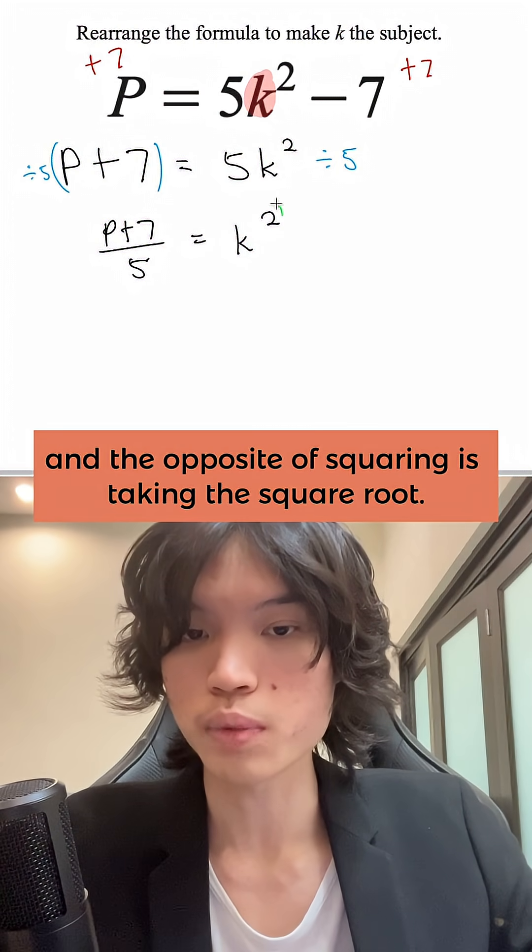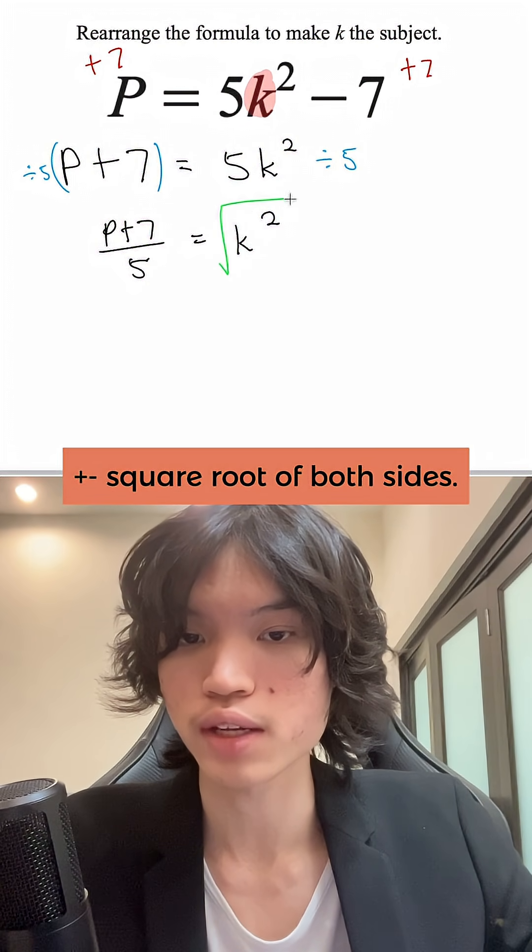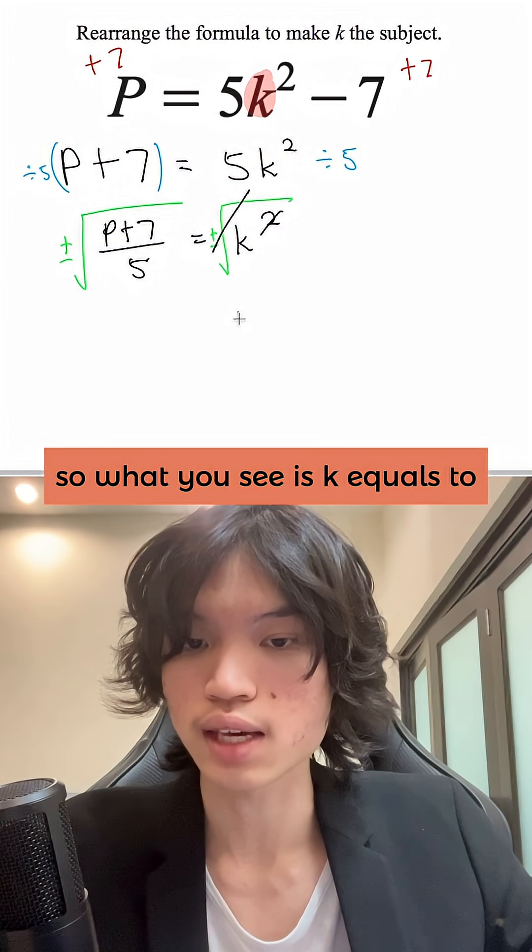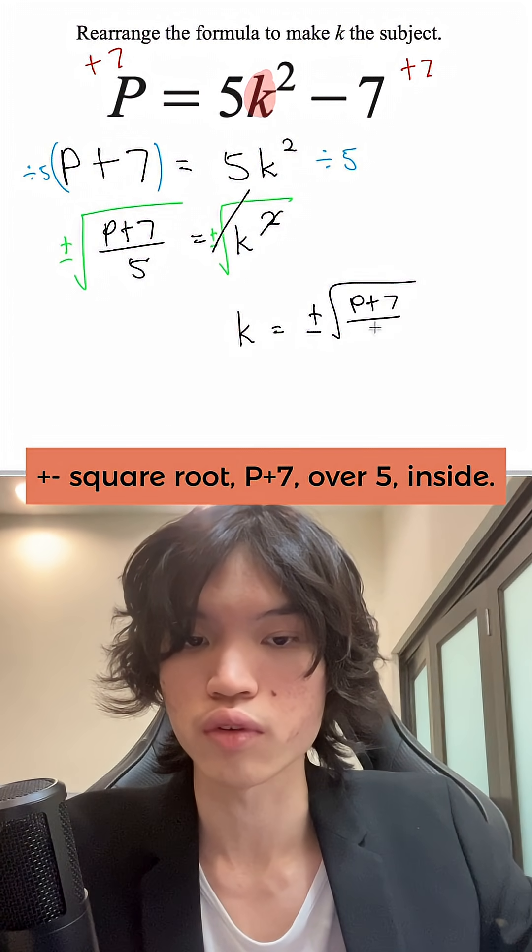In this case, we have k squared. The opposite of squaring is taking the square root, so we just have to take the plus minus square root of both sides. The square and the square root cancel each other out, so what you see is k equals plus minus square root P plus 7 over 5 inside.